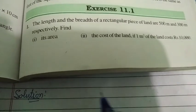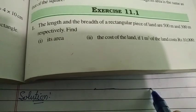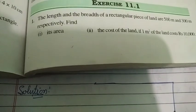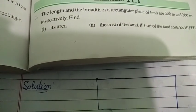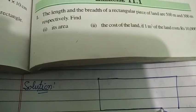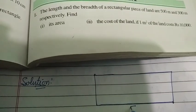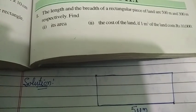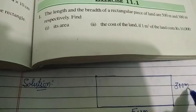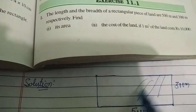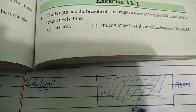They are saying that there is a rectangular land piece. You know what is the shape of a rectangle — just like this. This is the shape of this land piece. Length is given as 500 meters and breadth is given as 300 meters, and you have to find out the area inside of this land. It's a very easy question.